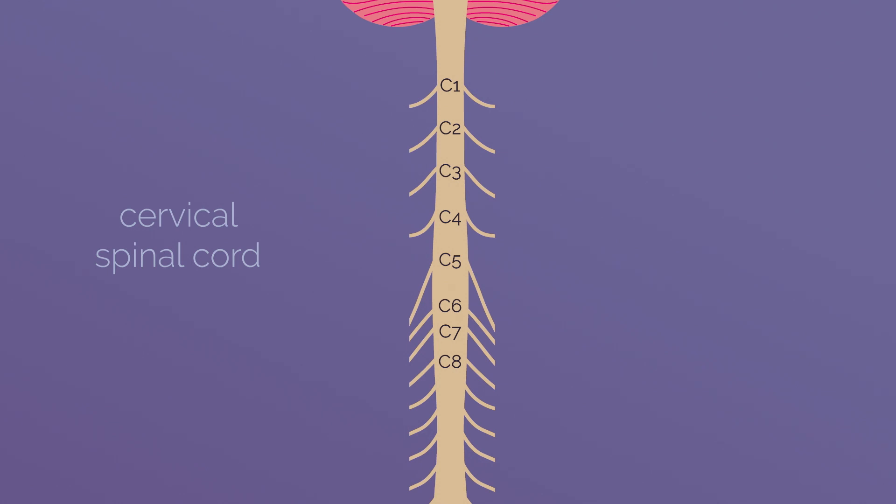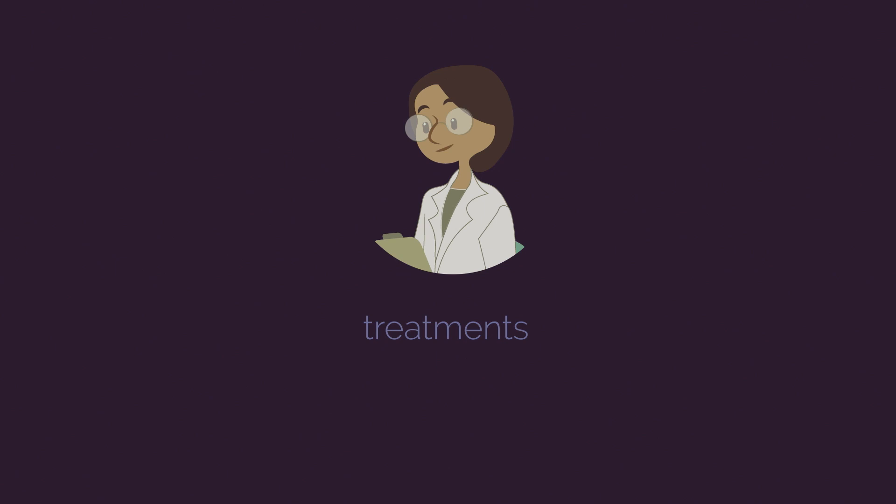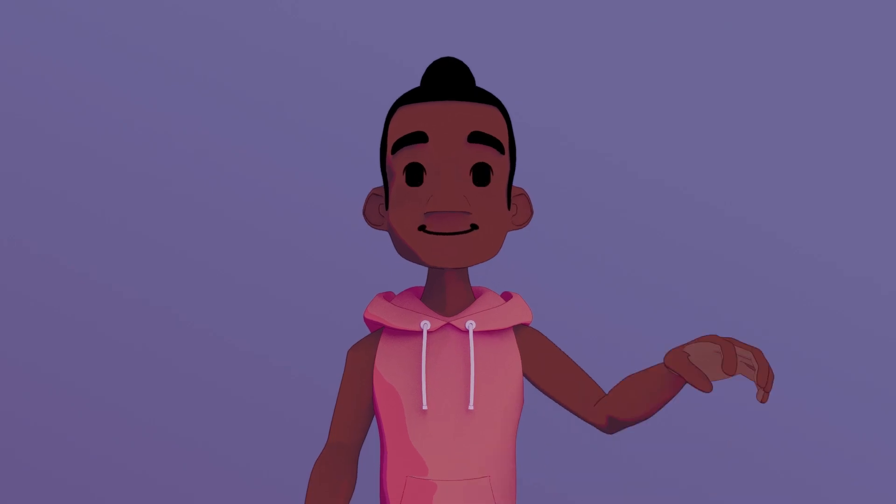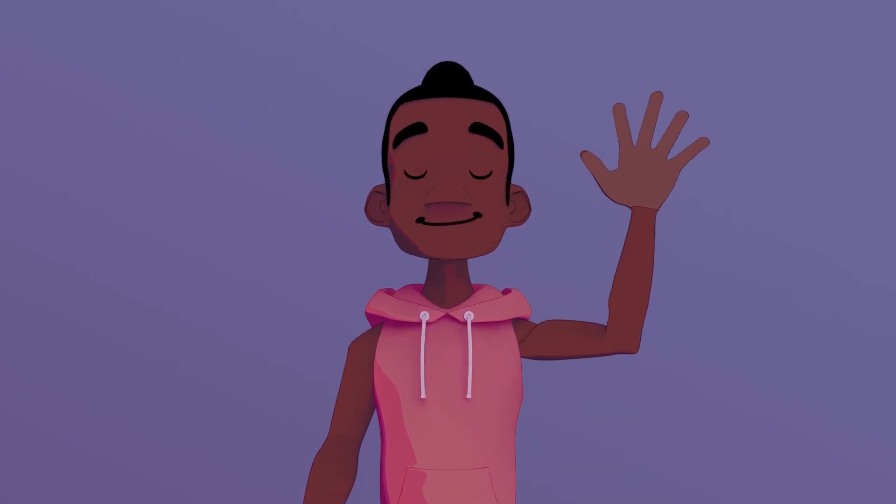Treatment options depend on the pattern of your injury. For individuals with an injury at the C4 to C8 level, surgery may be an option. This could take the form of a nerve transfer or a tendon transfer. Surgery can help improve movement of the arms or hands.